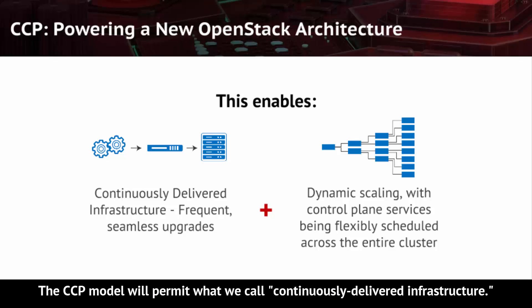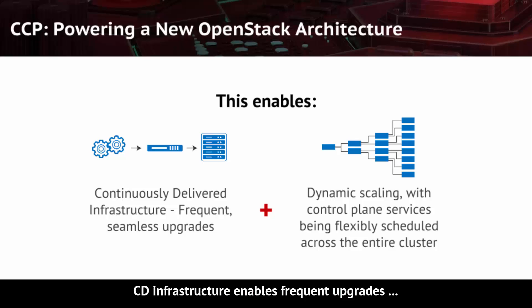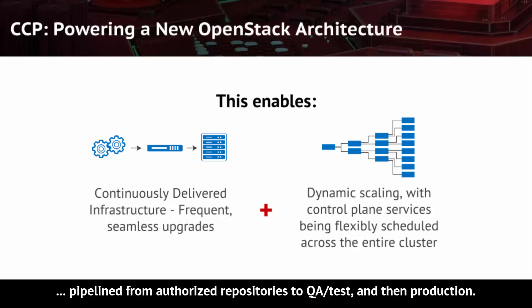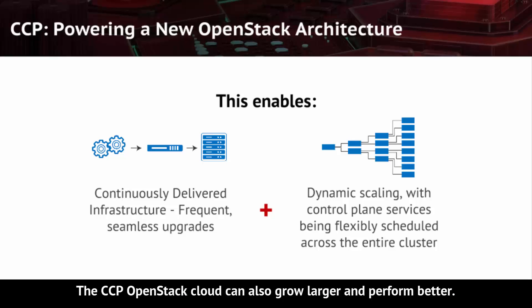The CCP model will permit what we call continuously delivered infrastructure. CD infrastructure enables frequent upgrades, pipelined from authorized repositories through QA test and then to production. Bug fixes and improvements arrive more quickly, and clouds are continuously made more stable and robust.